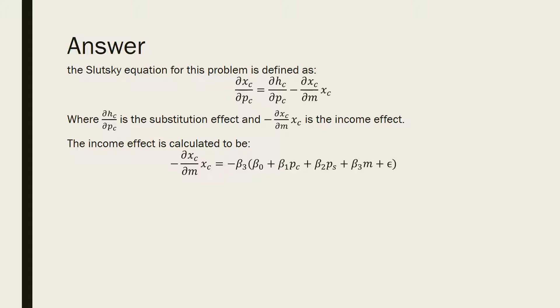The income effect can be calculated as the following, where we have negative beta 3, which is the partial derivative of the Marshallian demand for this company's cars with respect to income times the estimated regression for the demand for this company's cars.